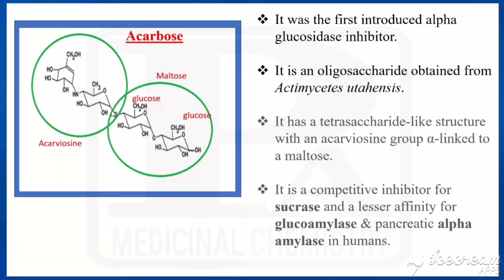The last ring is similar to glucose but has an extra double bond and no oxygen in the structure — it is not a saccharide. The acarbose portion (acarbiosin) and the maltose portion are connected by amino linkage, and these two units are connected by ether linkage with alpha configuration.